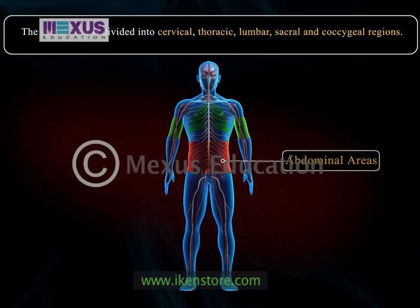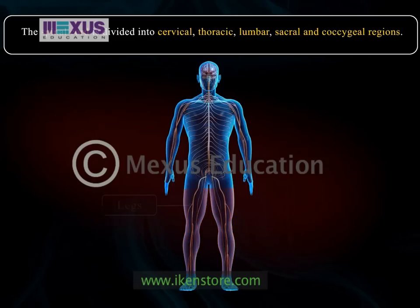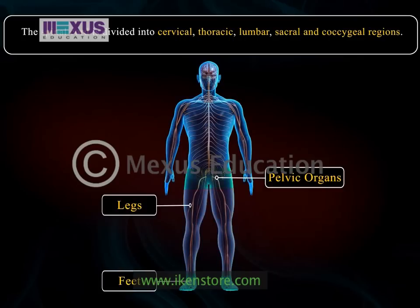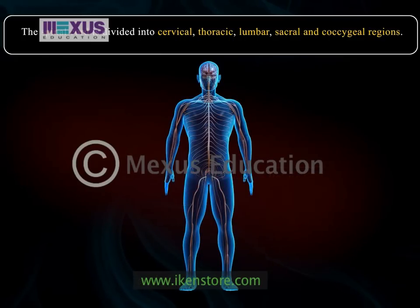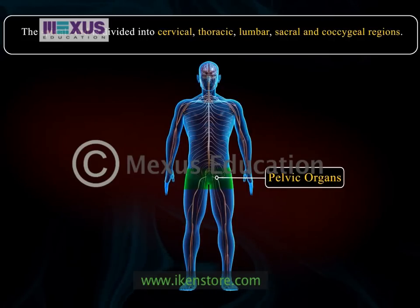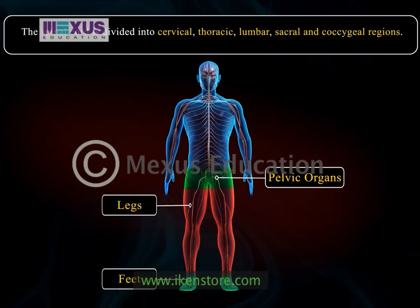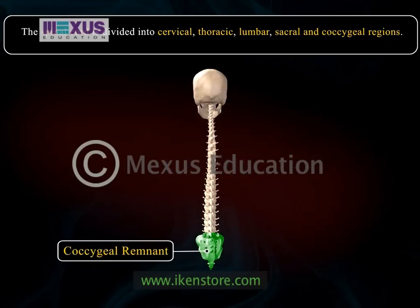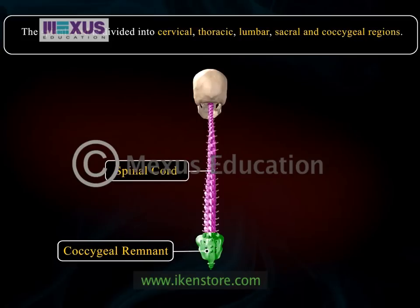Five lumbar segments transmit signals from or to the legs, feet, and some pelvic organs. Five sacral segments transmit signals from or to the lower back, pelvic organs, genital areas, and some areas in the legs and feet. The coccygeal remnant is located at the bottom of the spinal cord.